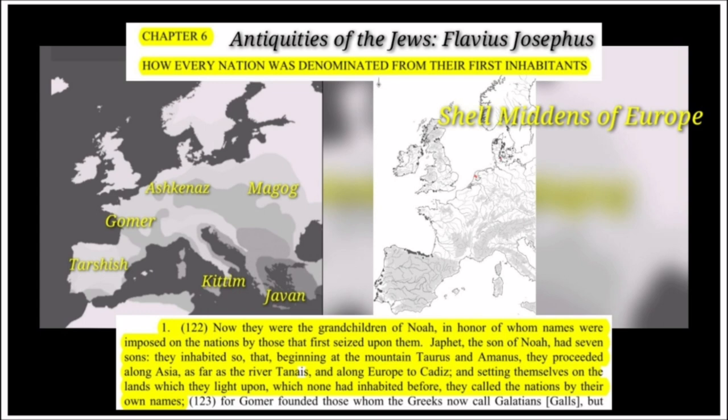Now they were the grandchildren of Noah, in honor of whom names were imposed on the nations by those that first seized upon them. Japheth the son of Noah had seven sons. They inhabited, beginning at the mountain Taurus and Amanus, proceeding along Asia as far as the river Tanais — the Don River of Russia — and along Europe to Cadiz, a city in Spain, calling the nations by their own names. The map on the left illustrates that idea: Spain — Tarshish; France — Gomer; Germany — Ashkenaz; Russia — Magog; Italy — Kittim; Cyprus and Italy — Greece — Javan.